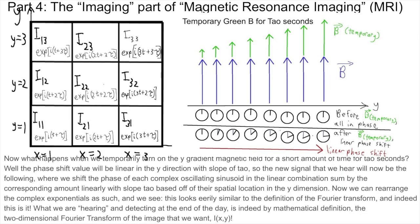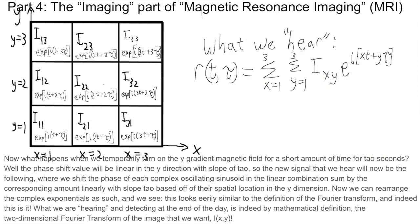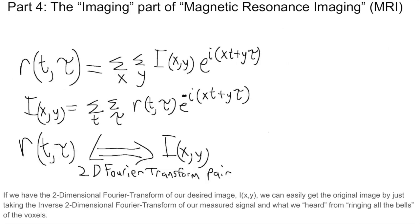Considering we want to perform phase encoding along the Y direction, our temporary gradient field should be along the Y direction. Once we've performed slice selection in the Z direction, we will only excite protons in this particular pizza box slice — all protons outside of this slice have a different resonant Larmor frequency and will not respond. Within that slice, we have a two-dimensional grid in the XY plane to take intensity measurements for. If we excite all the frequencies of this particular pizza box, all the pixels will undergo Larmor precession at a frequency depending on their X coordinate. This is a problem since all the points with the same X coordinate but different Y coordinates will ring at the same frequency — this is where we use phase encoding. What we hear is a superposition of all the ringing voxels simultaneously at their respective frequencies with their respective amplitudes, which can be written as a formula where I(x, y) are the amplitude/magnitudes of each voxel at their specific frequency linearly based off of their X coordinate. By replacing the trigonometric sinusoid with an oscillating complex exponential and temporarily turning on the Y gradient magnetic field for τ seconds, the phase shift value will be linear in the Y direction with slope τ, and we see this looks eerily similar to the definition of the Fourier transform — indeed what we are detecting is by mathematical definition the two-dimensional Fourier transform of the image I(x, y).